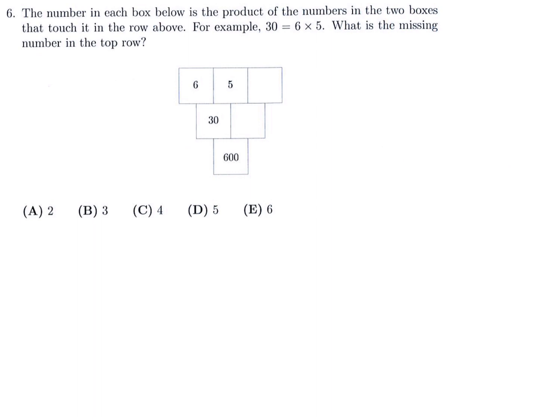The number in each box below is the product of the numbers in the two boxes that touch it in the row above. For example, 30 equals 6 times 5. What is the missing number in the top row? Calling the unknowns x and y: 30 times x equals 600, so dividing 600 by 30 gives x equals 20.